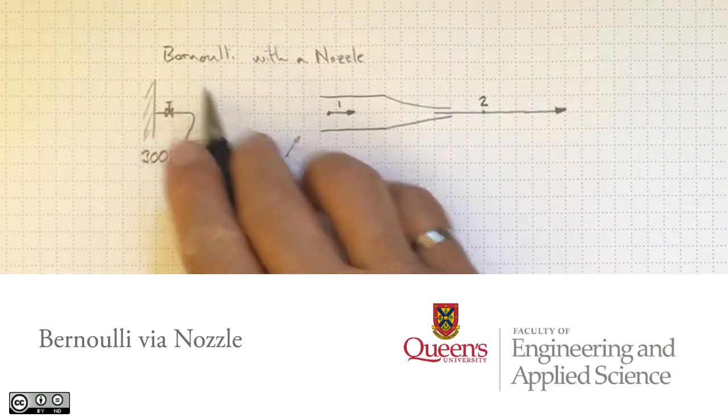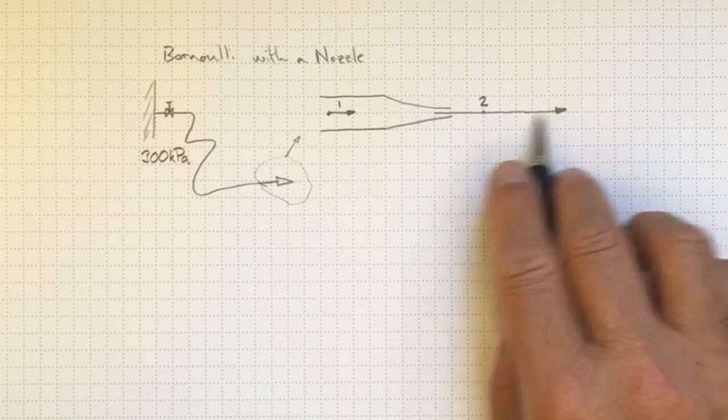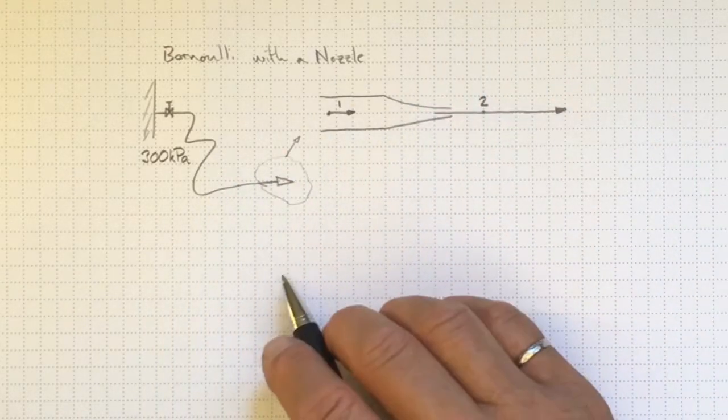We can apply Bernoulli's equation with a nozzle to find out how fast water will come out of a nozzle from our typical garden hose.